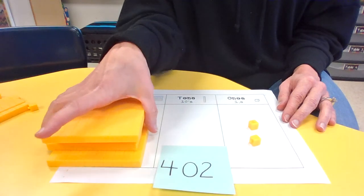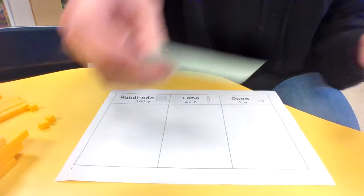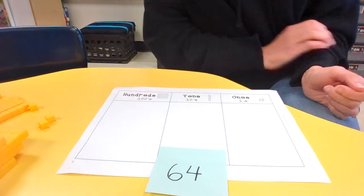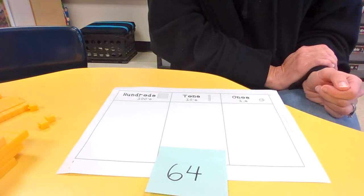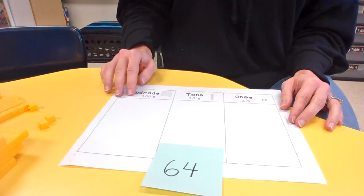Go ahead and clear your chart. Your next number is 64. Start building 64.